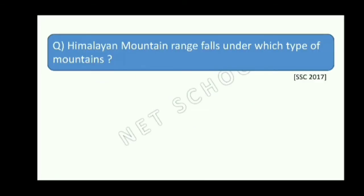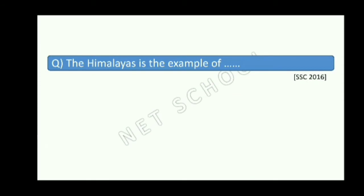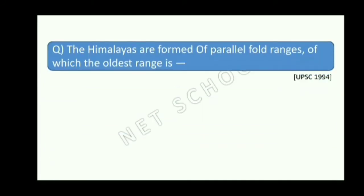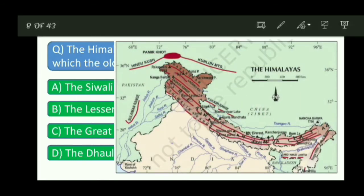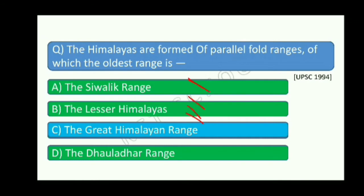Now I will discuss some questions. The Himalayan mountain range falls under which type of mountains? The Himalayas are an example of fold mountains. The Himalayas are a form of parallel fold ranges — of which the oldest range is the Trans-Himalaya, then the Greater Himalayas, then the Lesser Himalayas. The Trans-Himalaya students are older than the Greater Himalayas.